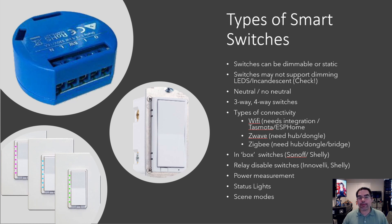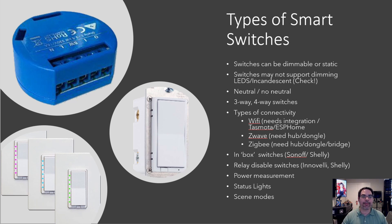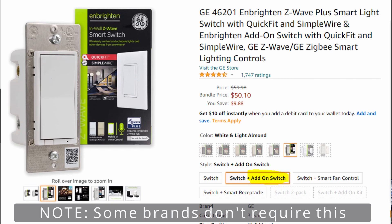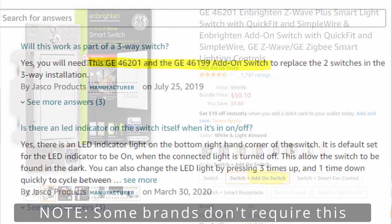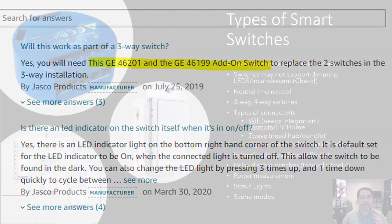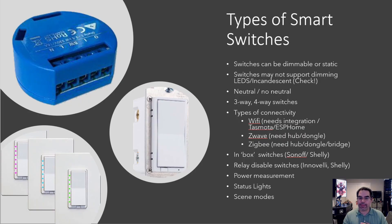Three-way switches: if you're walking down a hallway, you have a light switch, you flip it on, walk down and flip it off at the other end — that's two switches controlling one light, and that's called a three-way switch. In smart switches these are a bit different. You buy a three-way switch and then you don't buy a second one — you buy an add-on switch or auxiliary switch, and the three-way switch will tell you which model you need for the other switch.